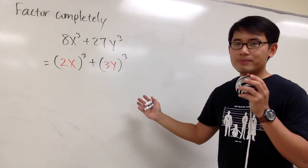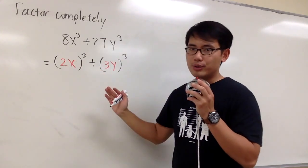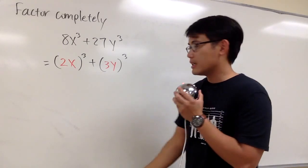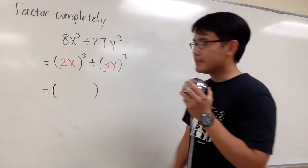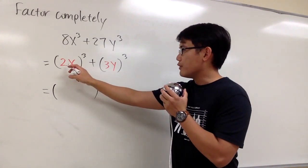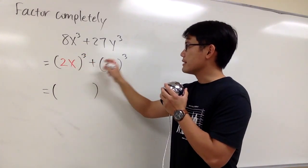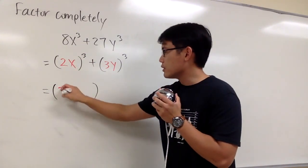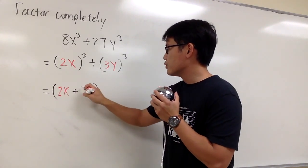And then we're ready to go. This is the sum of two cubes, so we're going to use a formula for this. I'm going to show you how to factor this out. We will first have 2x + 3y in the first parentheses.